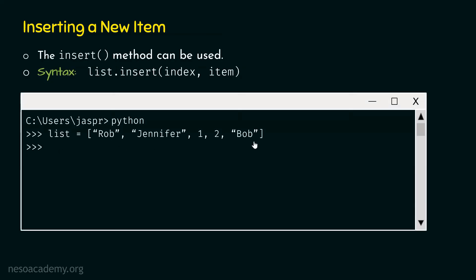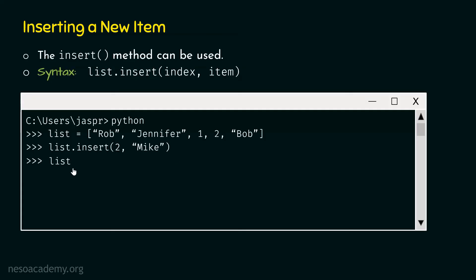Now let's say we want to insert a new name, Mike, at the third position of this list. For this, we can type the command: list.insert(2, 'Mike'). As we want to insert this item at the third position, we must specify index 2 here. Let's hit enter and type list to check whether the list is updated. We will get Rob, Jennifer, Mike, 1, 2, and Bob. This item is successfully inserted at position three.